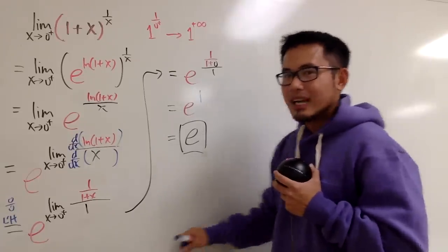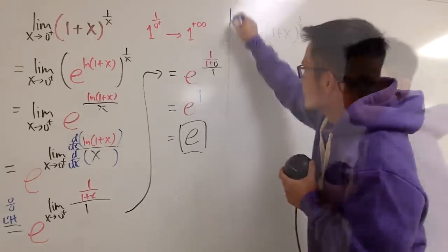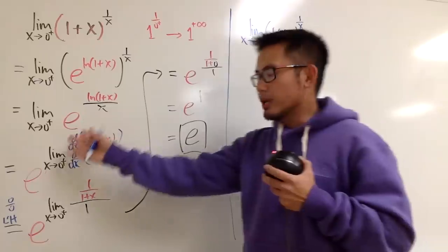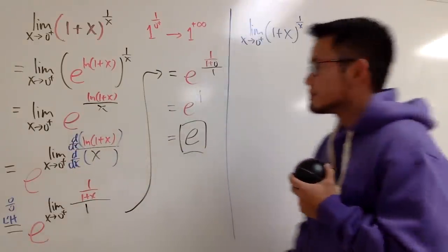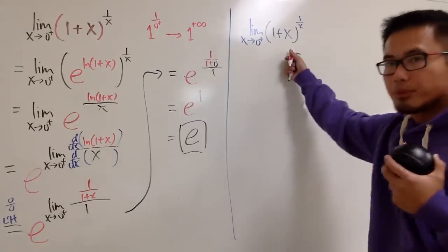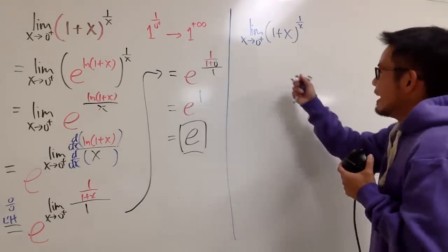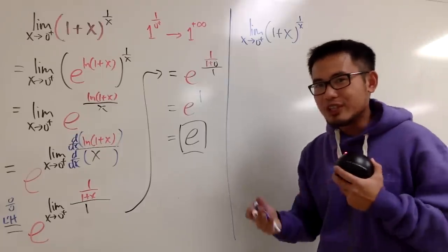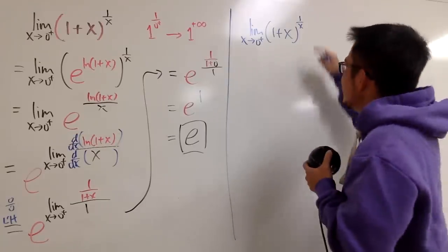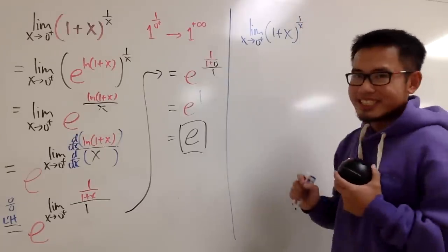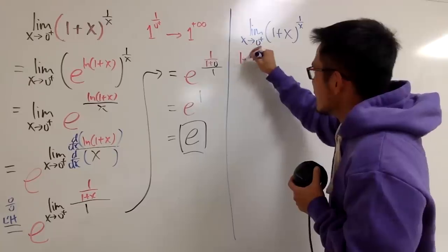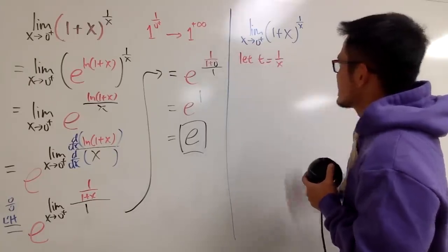Okay, as I promised, I will also show you guys another way to do it. So let me do this. If you didn't want to do any derivative or things like that like this, do the following, because this is a pretty famous limit question as well. Anyway, we are going to do some change of variables, right? Because this power is bothering us. What I'm going to do is I will say that t equals 1 over x.